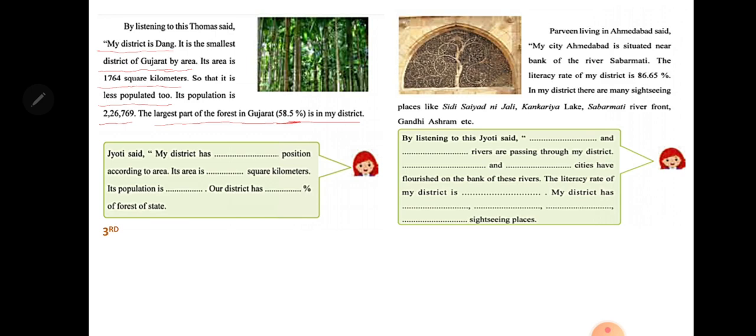Jyoti said: my district has third position according to area. Its area is 7,792 square kilometers and its population is around 21.8 lakhs. Our district has 7.99 percent of the forest of the state. This data has been taken from the internet.